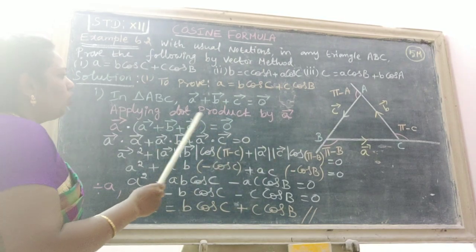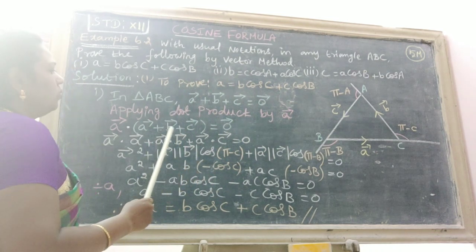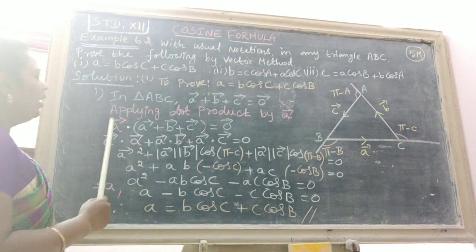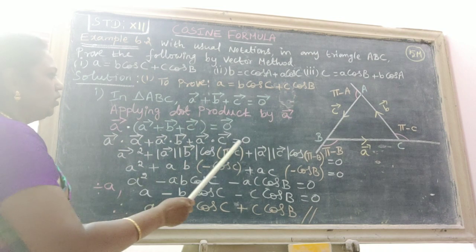Here applying dot product by A vector. Therefore A dot (A vector plus B vector plus C vector) equals zero vector. Therefore we get A dot A plus A dot B plus A dot C equals zero.